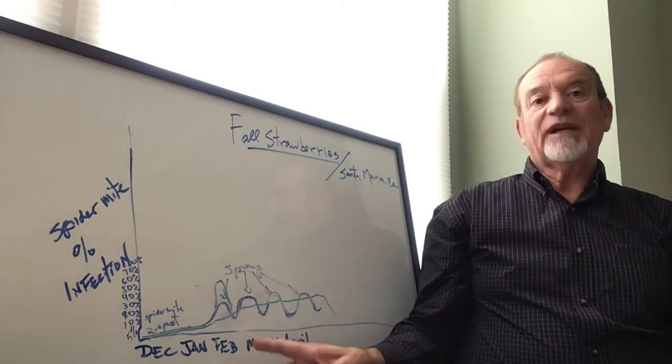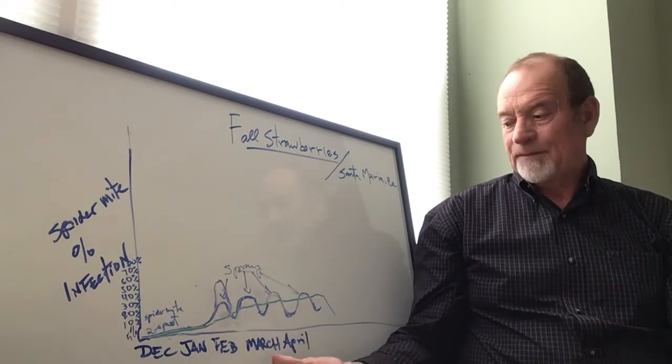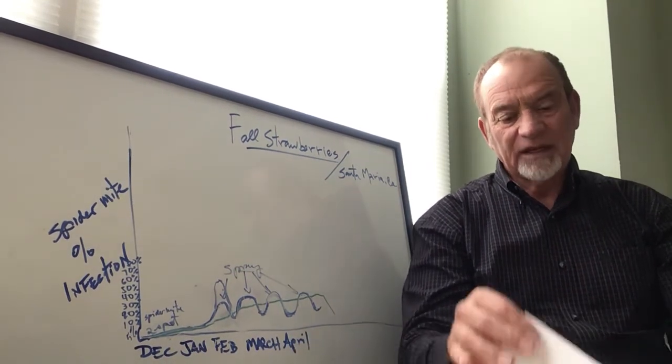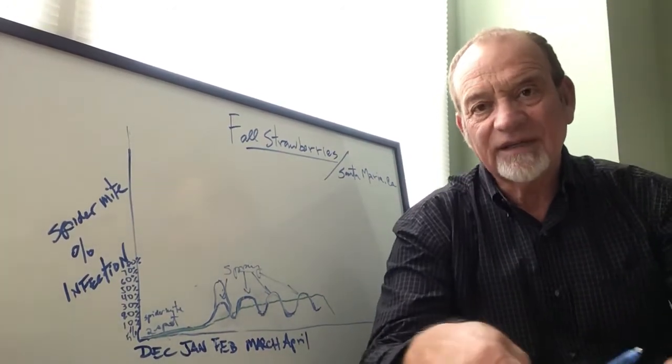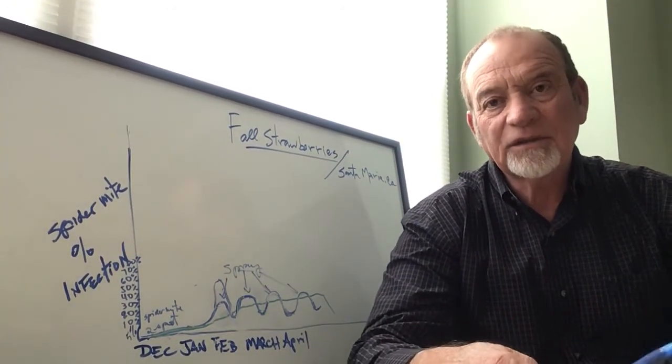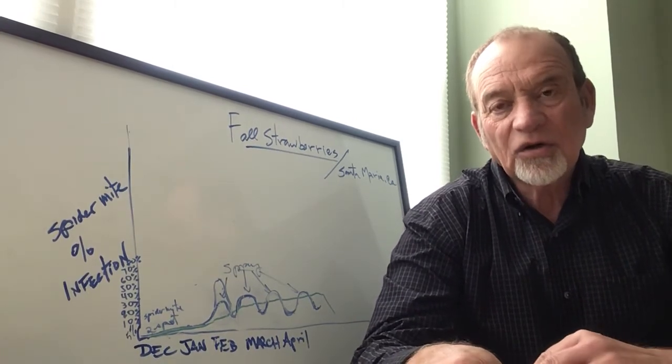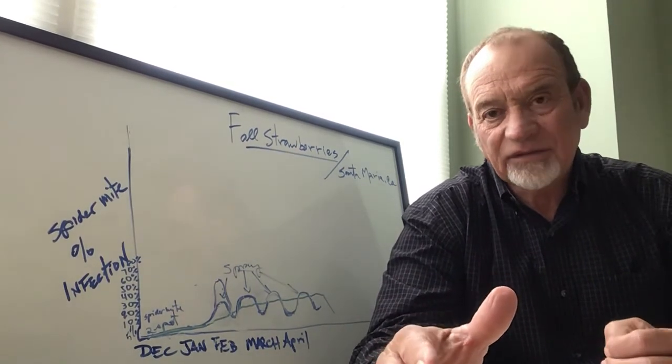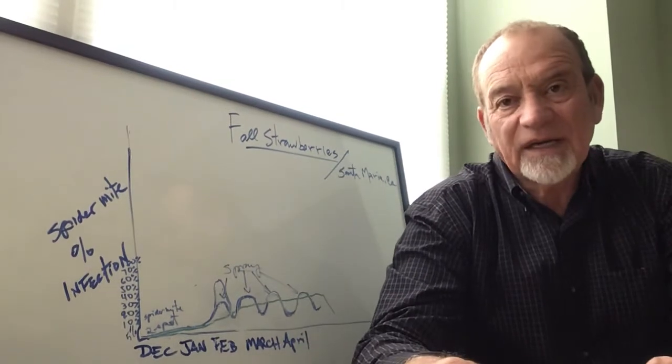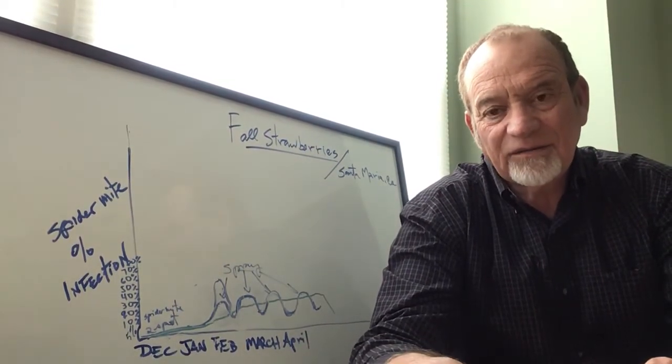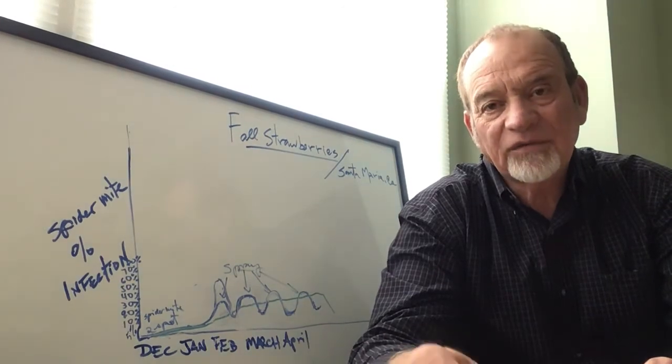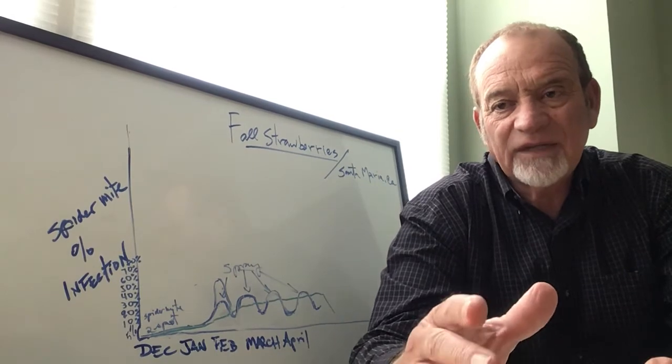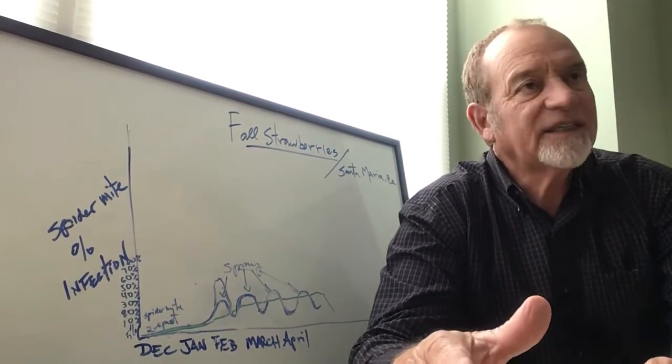Trying to be done with spider mite control as early as March or April—going over the yield losses, as you can see, it's a no-brainer. Get your orders early, call ahead of time. I know there's a lot of growers that like to request, 'I need californicus tomorrow,' but we're dealing with an industry working with live predatory mites.